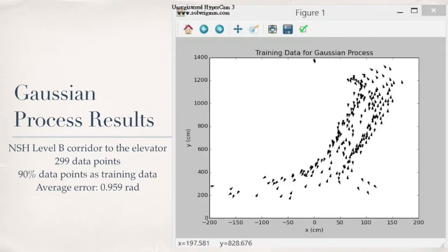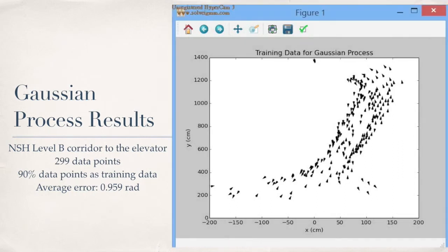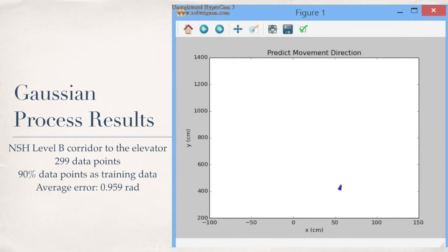Here are some results of the Gaussian process with the data we collected on the corridor to the elevator on the New Simon Hall level B. We used 90% of the data points as the training data, shown as black arrows in this video. The red arrows are ground truth directions of movement, and the blue arrows are predictions.